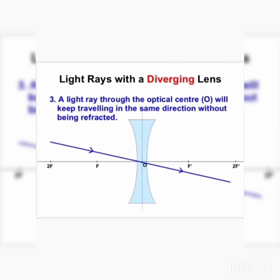The third case is the same as in the convex lens. When light passes through the optical center of the lens, it will not change direction. The light will continue along the same path without any deviation.